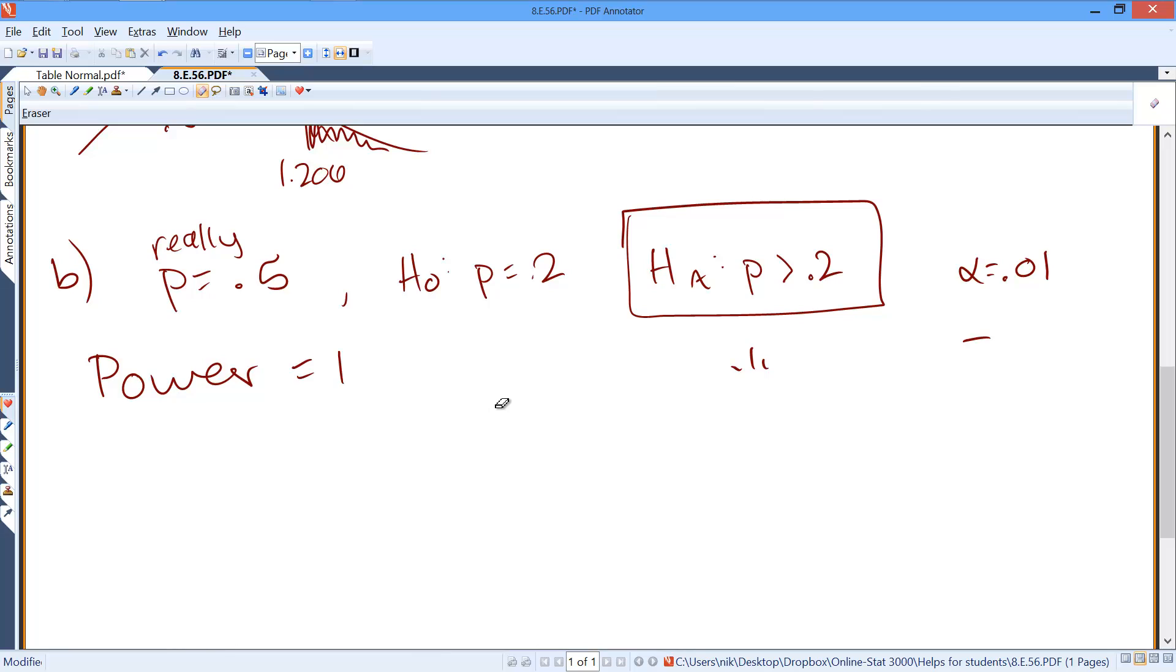What is the probability of power? Which is the probability of rejecting the null hypothesis when H0 is false. Since our population proportion is 0.5, obviously the null hypothesis is false and we want to reject it.